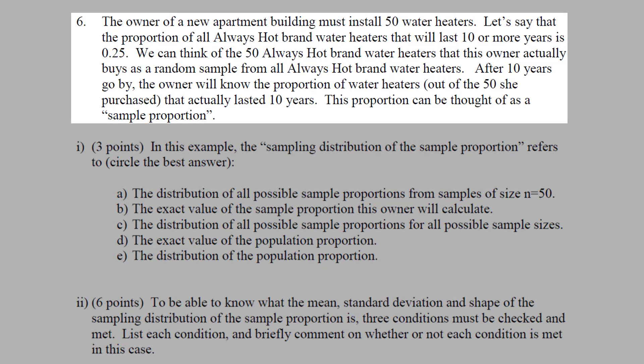The owner of a new apartment building must install 50 water heaters. Let's say the proportion of these water heaters that will last 10 years or more is 0.25. We can think of these 50 water heaters that the owner buys as a random sample of all the water heaters. After 10 years go by, the owner will actually know the proportion of water heaters that actually lasted 10 years. This proportion that lasts 10 years can be thought of as the sample proportion.